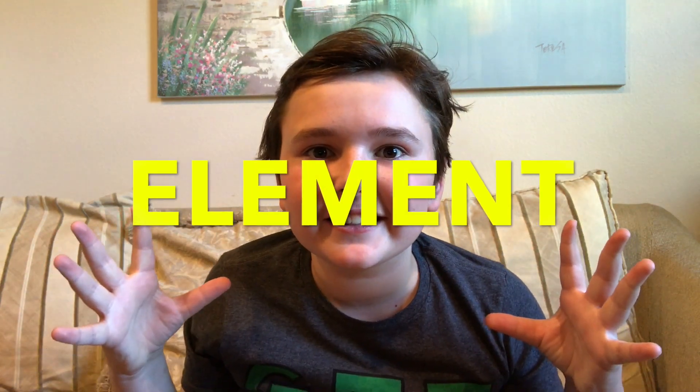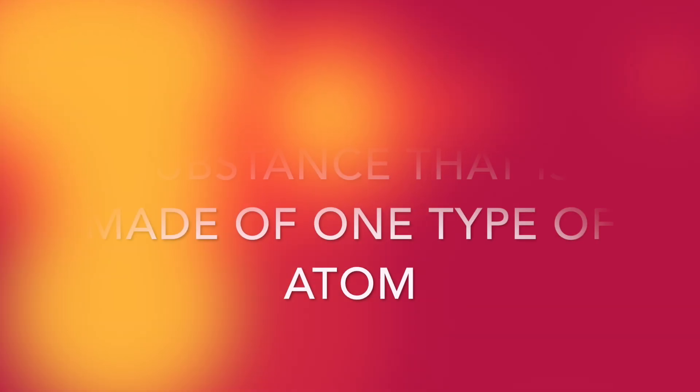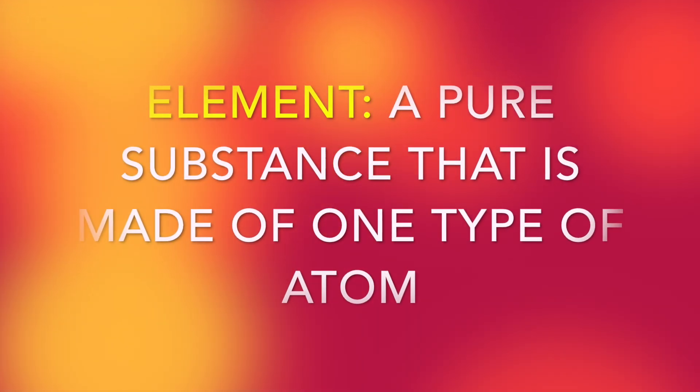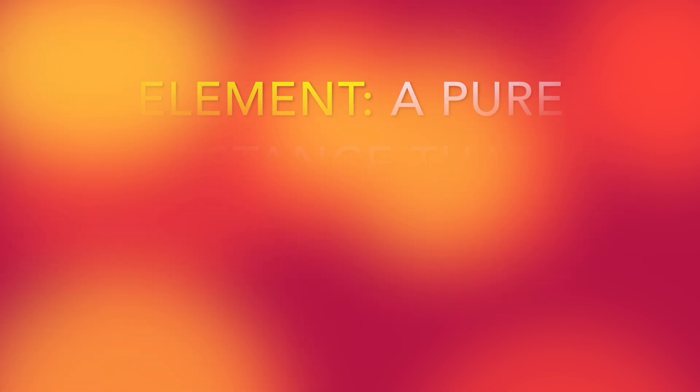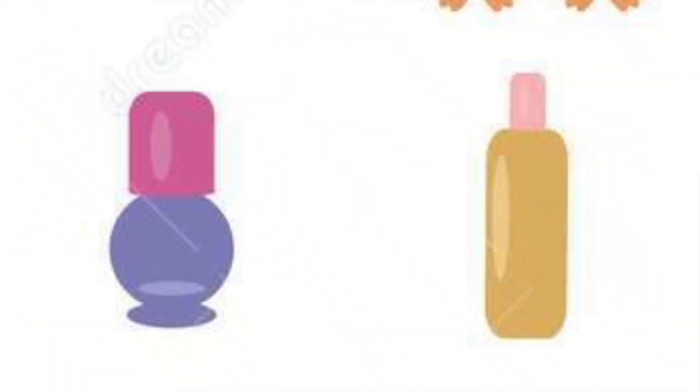Now first, what is an element? An element is a pure substance that is made of one type of atom. We use elements to form every other type of matter on our planet. Elements can't be broken up into anything smaller. Elements are the basic building blocks on our planet.